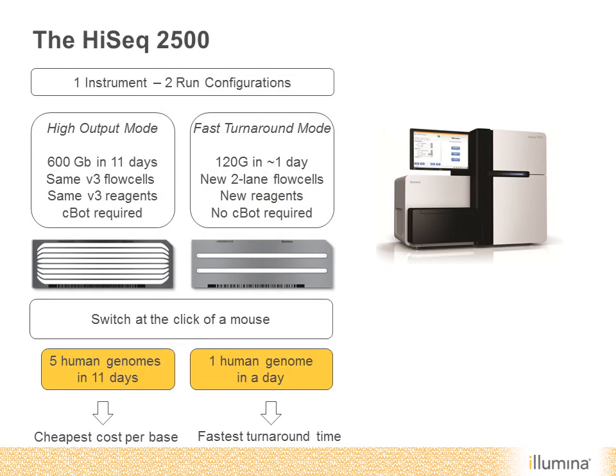That was a quick update on the MiSeq platform. Now introducing the new HiSeq 2500 — a new instrument concept where a single instrument can be run in two different configurations. You can run your HiSeq just as today and generate 600 gigabases of data in 11 days using the same reagents, or run it in fast turnaround mode to generate basically a genome's worth of data within just about 24 hours.